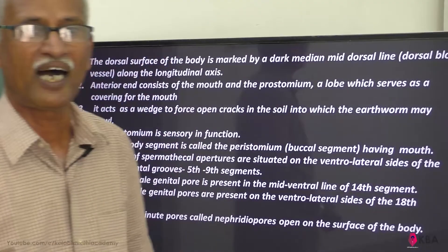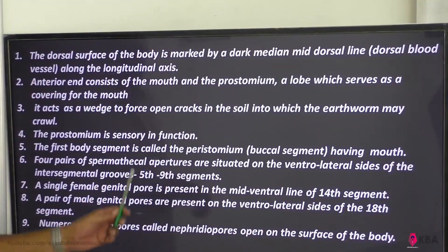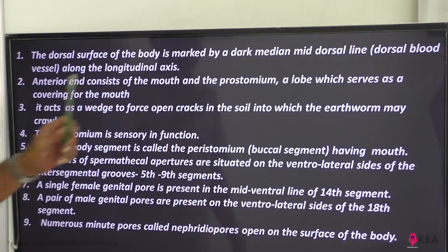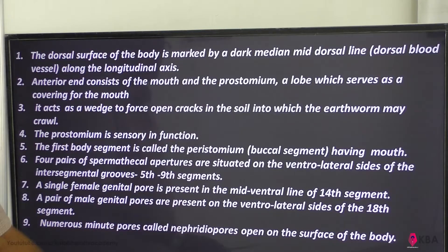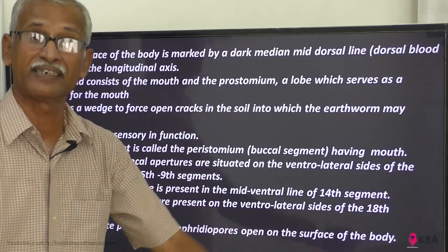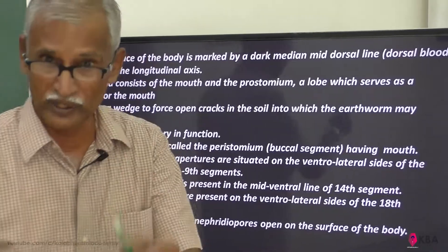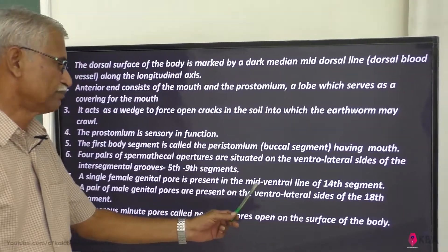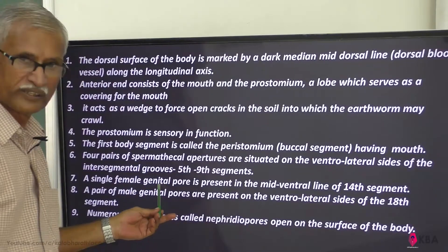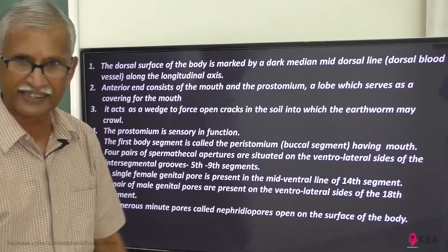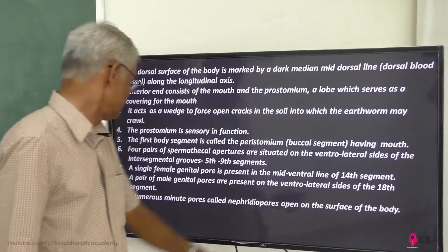Spermatica is produced by male gametocytes; male gametes are stored — that is spermatica. There is a single female genital pore, which is present on the mid-ventral line of the 14th segment — that is the male and female reproductive system. A pair of male genital pores are present on the ventrolateral sides of the 18th segment.